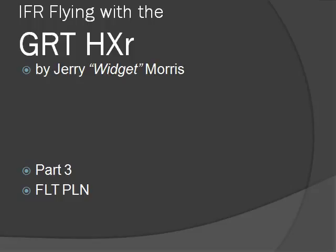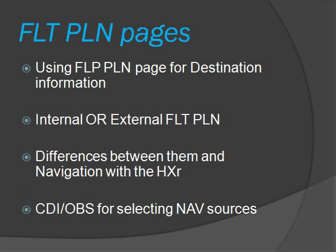Let's continue on and talk a little bit about the flight plan. I'm not going to dwell too much on this simply because I don't use it all that much — I do most of my navigating with the external nav source, which is my 650. But let's talk about it just enough to get comfortable and familiar with it. There are some very good features in it. The flight plan pages can be used for destination information. There are differences between the internal and external flight plan — they're color coded: internal is blue, external is yellow. Let's talk about the differences between them and navigation with the HXR and the CDI OBS soft key for selecting your different nav sources.